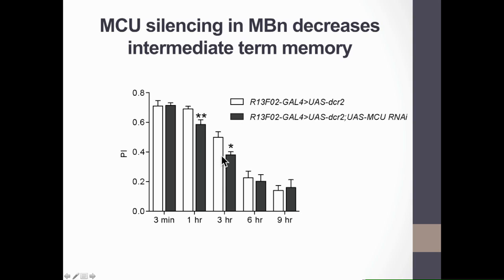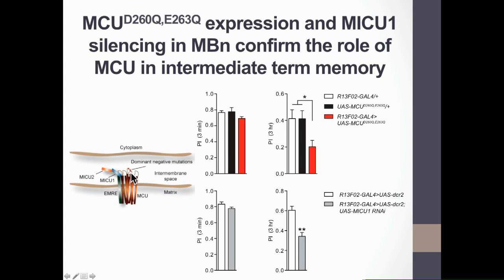All these results were also confirmed by expressing a dominant negative form of the channel or by silencing the MCU regulator MICU1. In both cases, we didn't observe any immediate memory defect but a significant decrease in intermediate-term memory. For all the genetic insults presented, we verified by calcium imaging experiments that they caused, as expected, a decrease in mitochondrial calcium entry in mushroom body neurons.